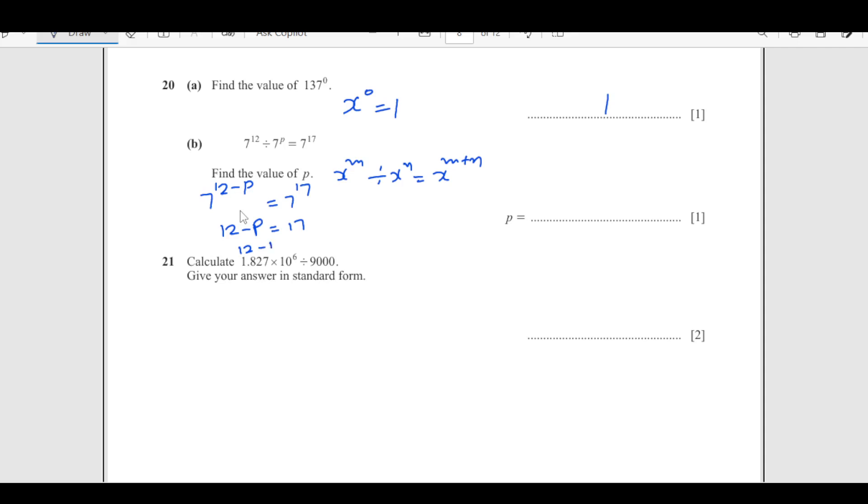So 12 minus 17 equals P. So P is minus 5.